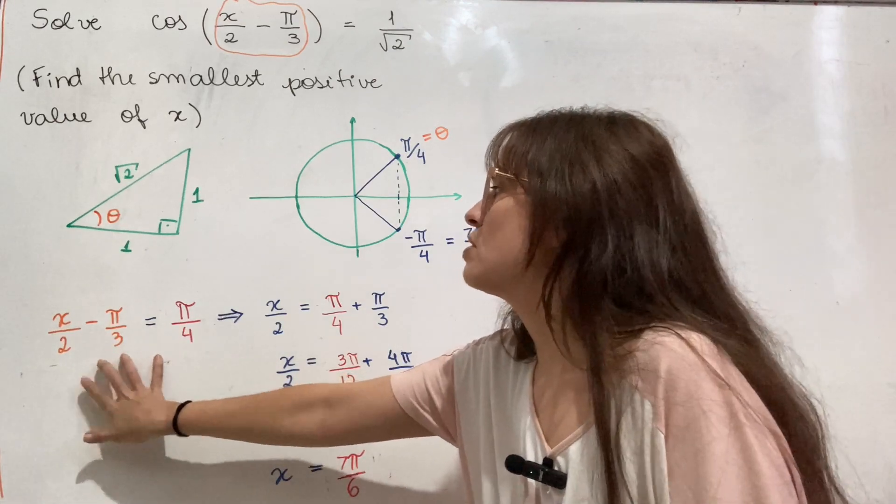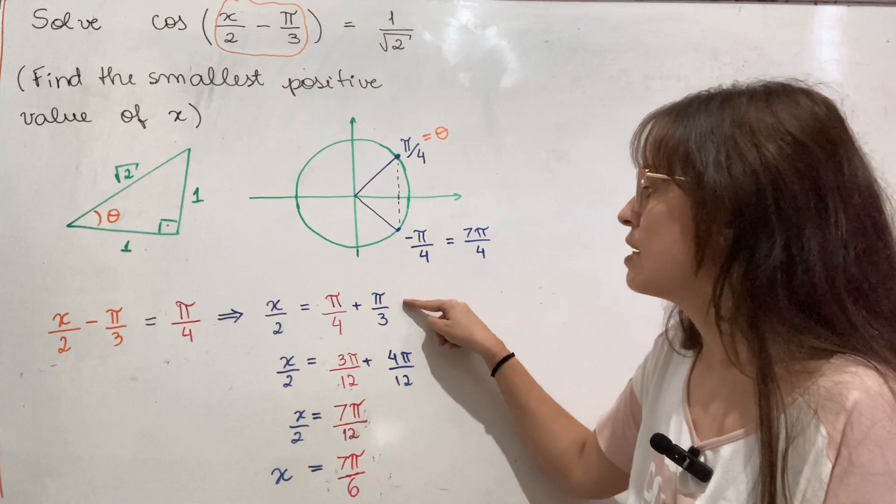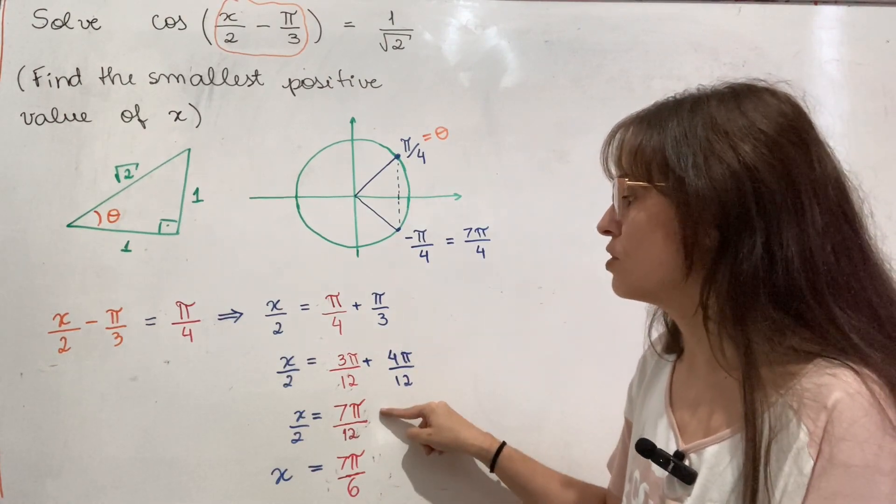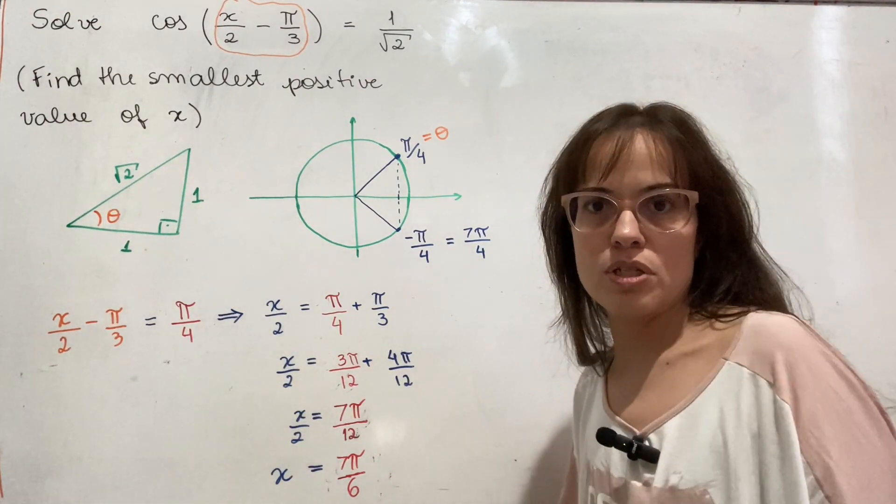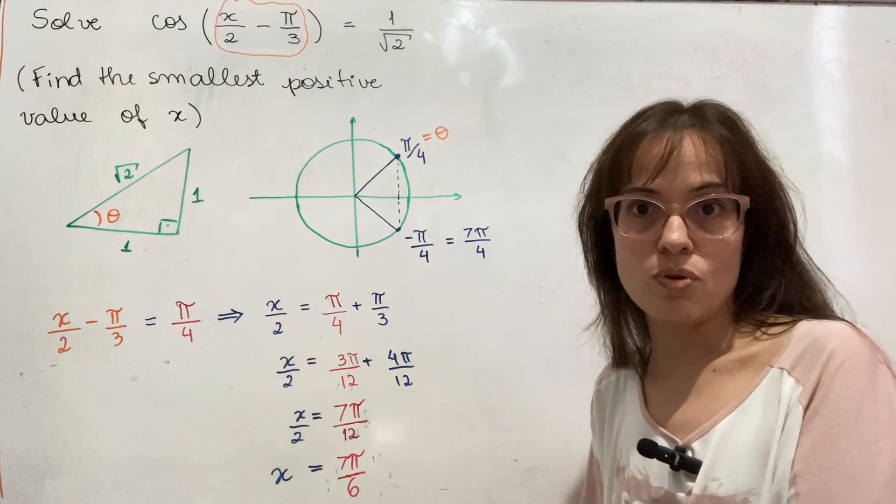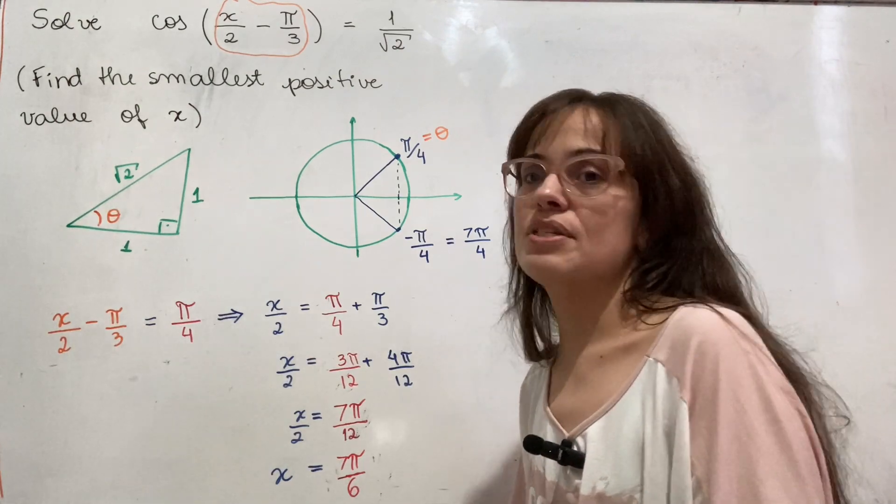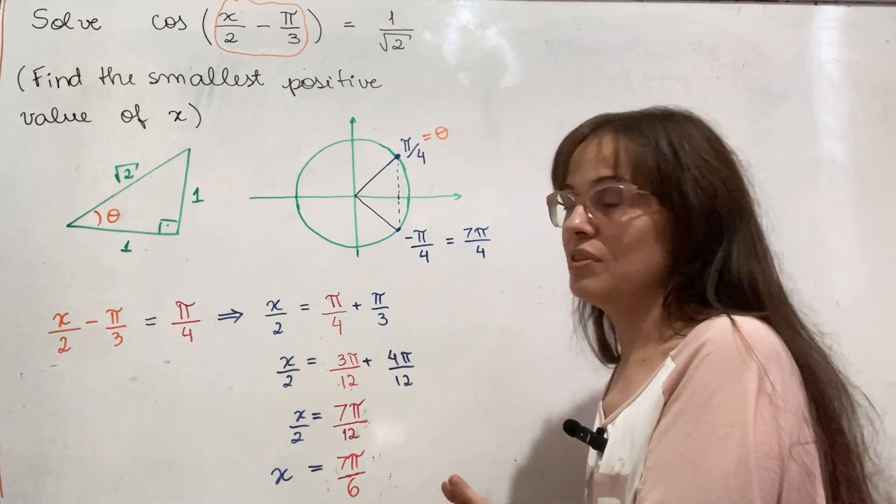But either way, I want to figure out what happens to x now. So I have to say that x over 2 minus π over 3 is the thing that is equal to the π over 4. I'm starting with this value up here. And then I'm just solving this equation for x. I start by adding π over 3 on both sides, then I put both fractions in the same denominator, add them together, and multiply both sides by 2, finding x equals 7π over 6, which is a perfectly good positive number to have as a solution for this equation. But the question was asking for the smallest possible one, and at this point I still don't know if this is it.